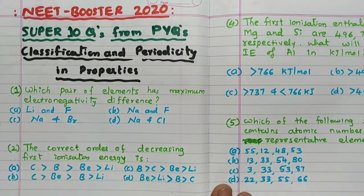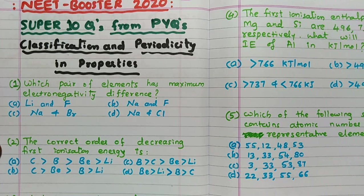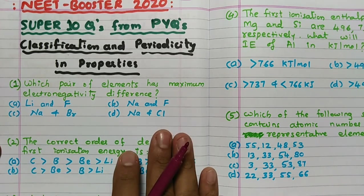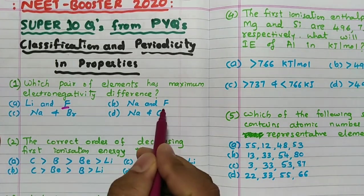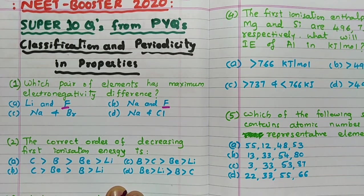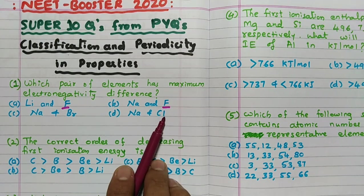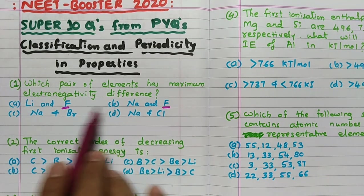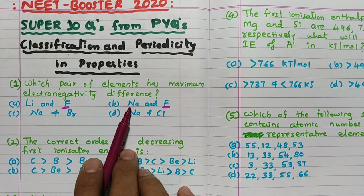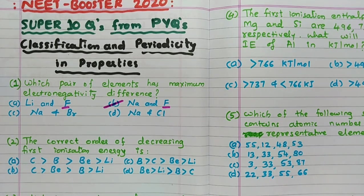The first important question is: which pair of elements has the maximum electronegativity difference? We know that the highest electronegative element is fluorine. Considering the options, sodium bromide and sodium chloride have less difference, so either lithium fluoride or sodium fluoride should be the answer. Since sodium has less electronegativity than lithium, the difference is more for Na and F. Hence the answer is Na and F.